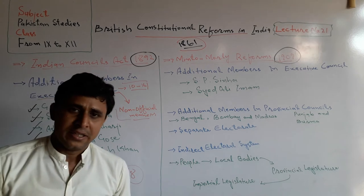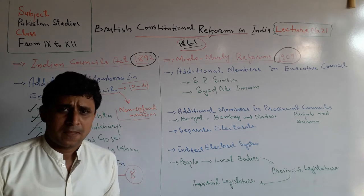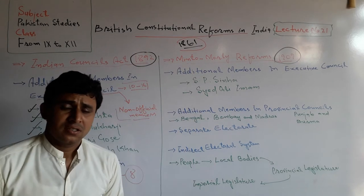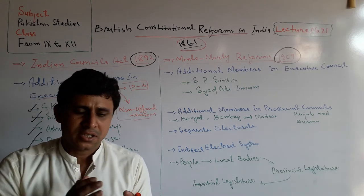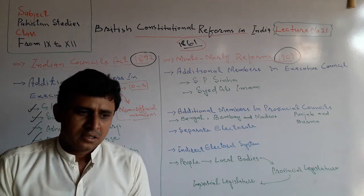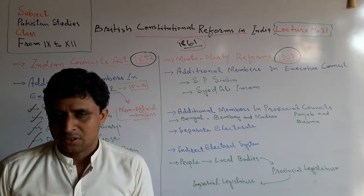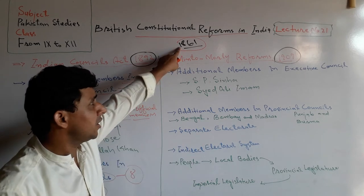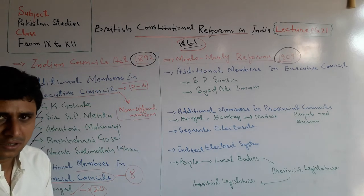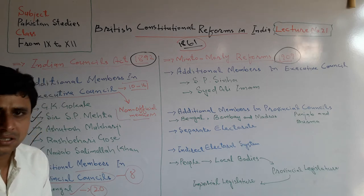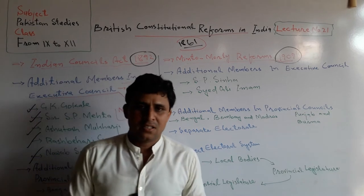In the Indian Councils Act 1892, additional non-official members had limited powers. But in the 1861 Indian Councils Act, they had no power at all — they could only sit in council and observe the activities of the British government. In the 1892 act, they were given a limited power: they could ask questions, but just a single question — not supplementary or extra questions.